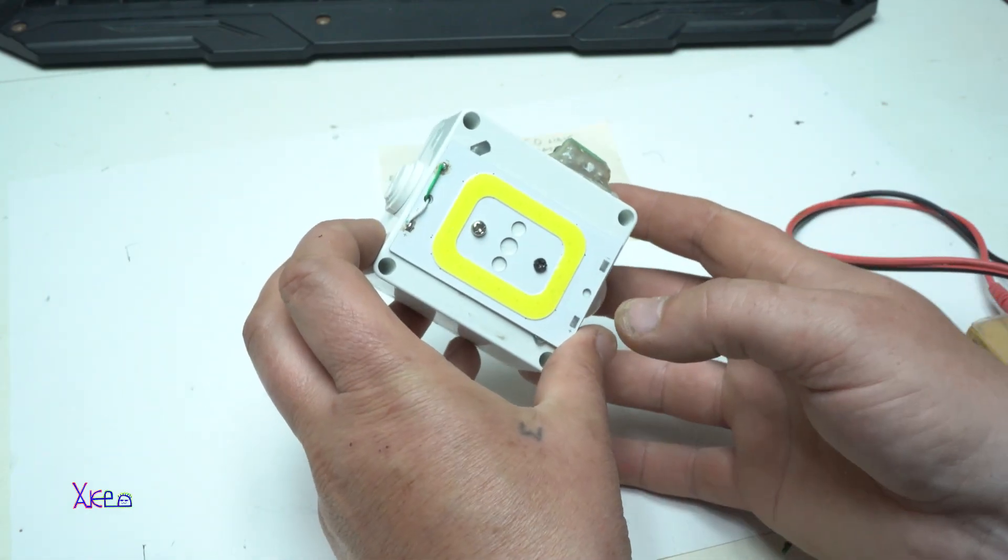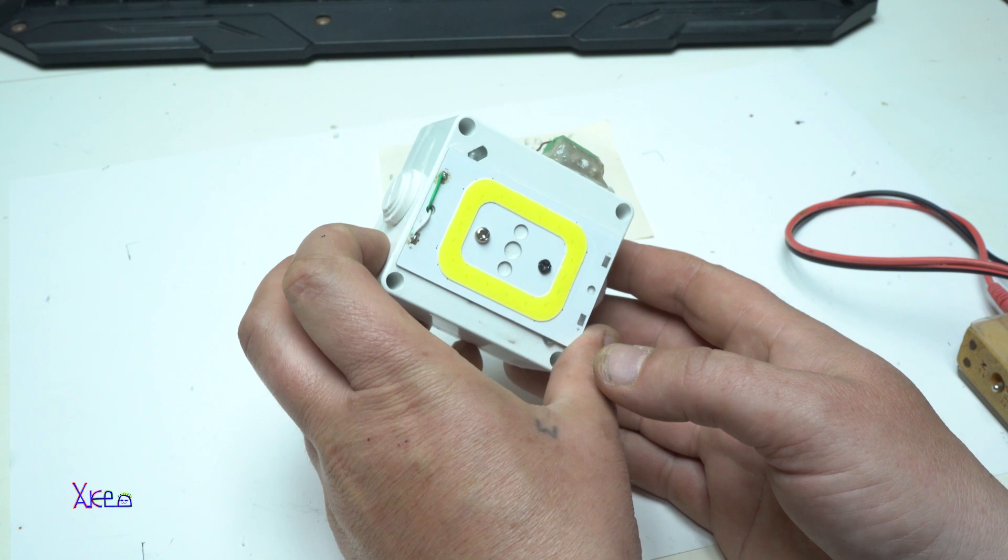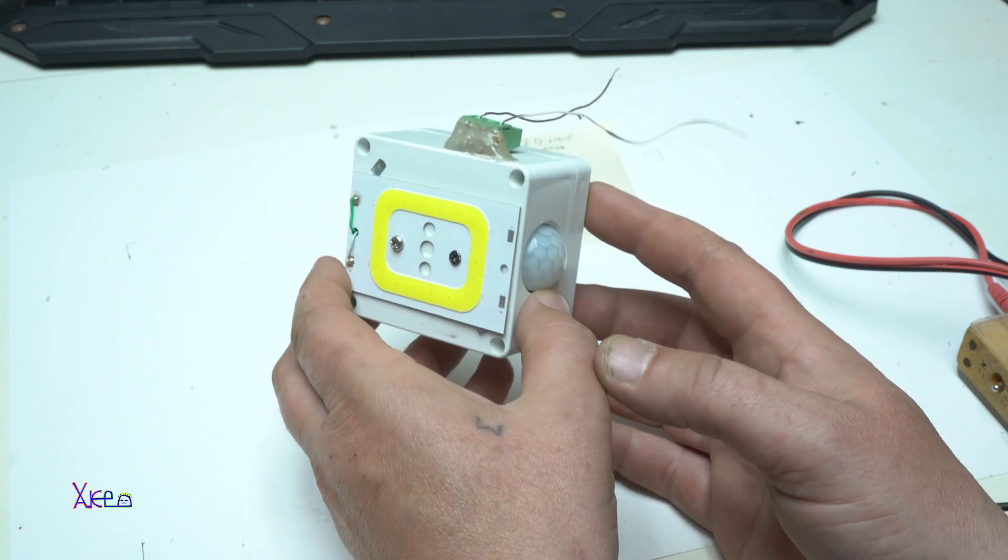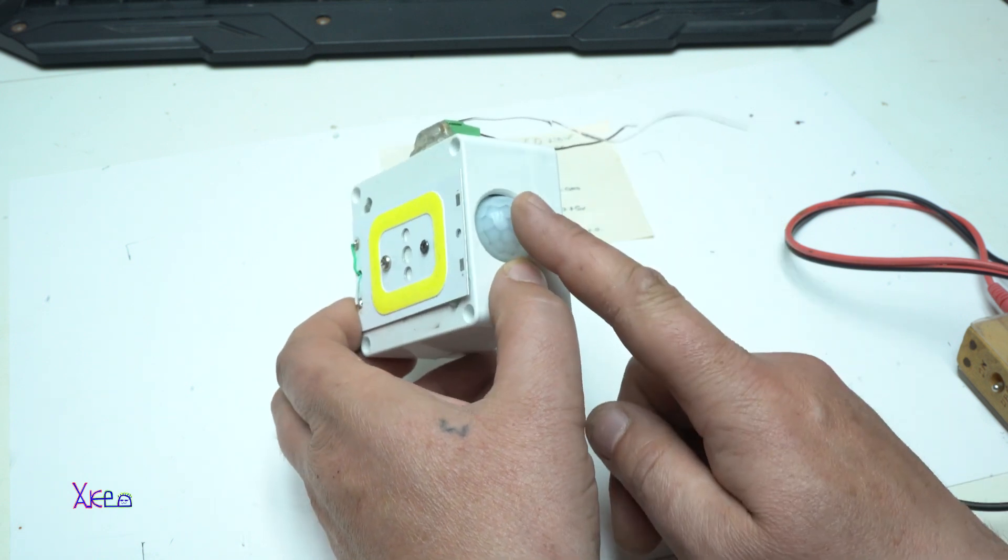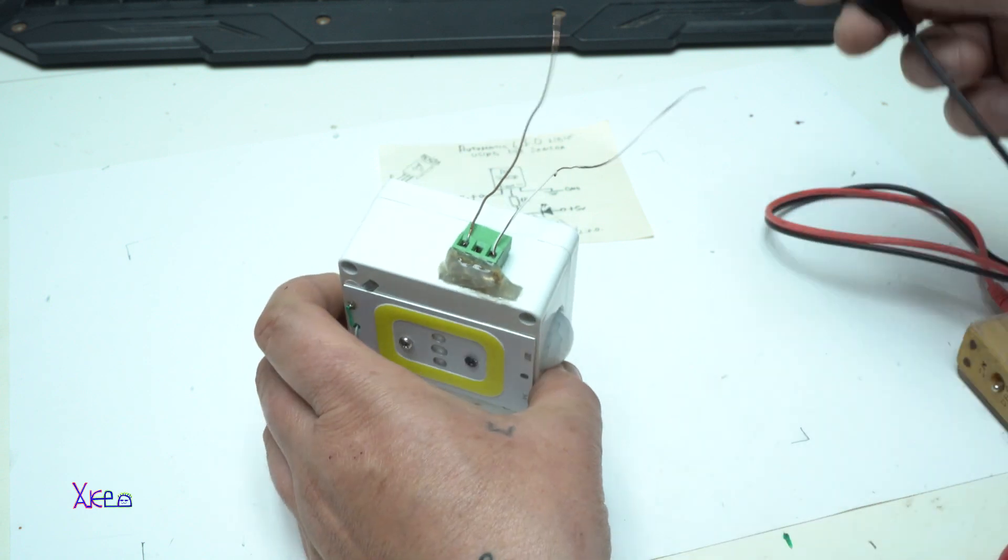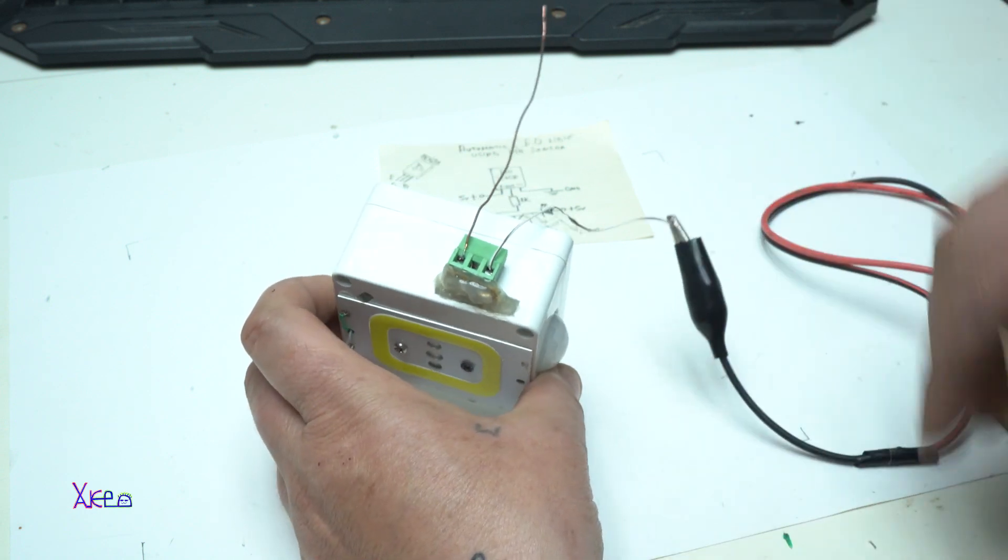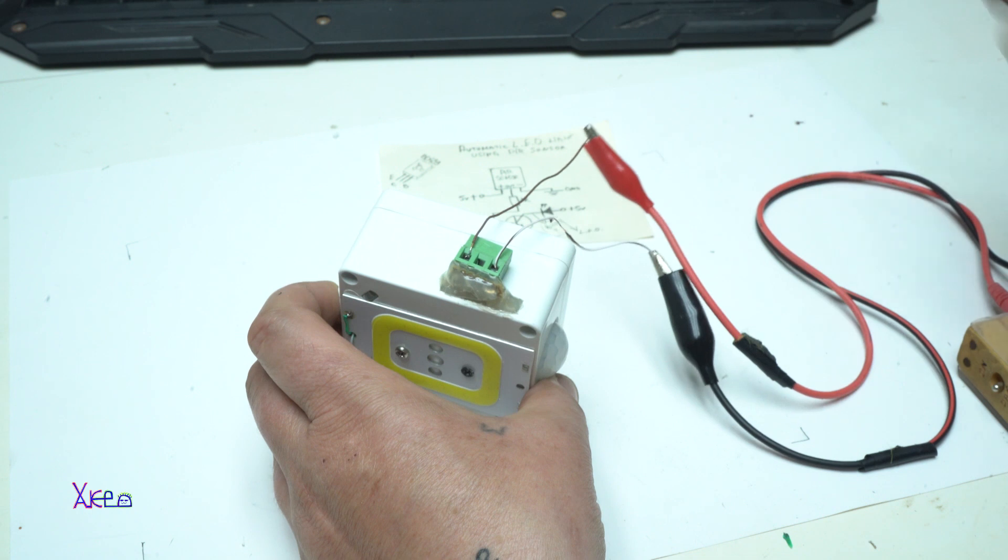And here it is, working DIY project. Call it automatic LED light using a PIR sensor. Now I am going to connect to five volts.